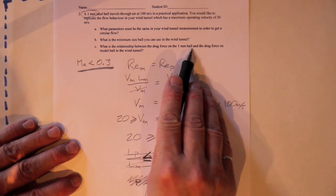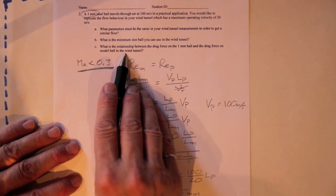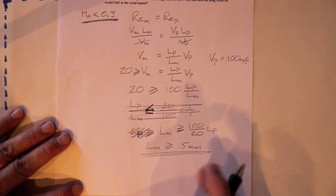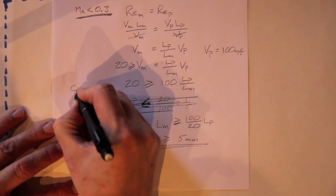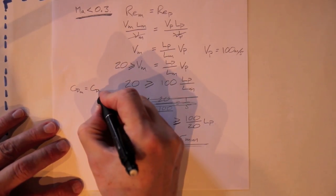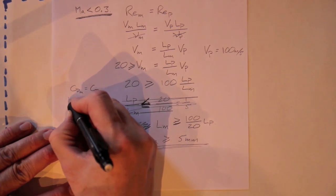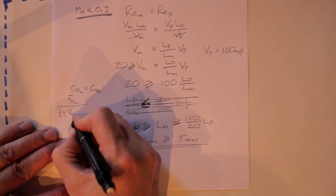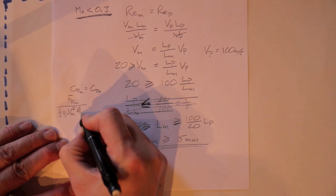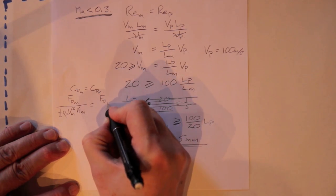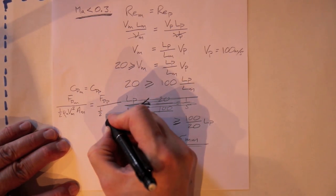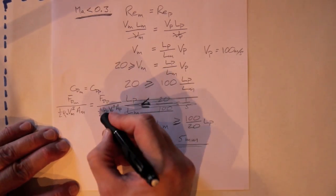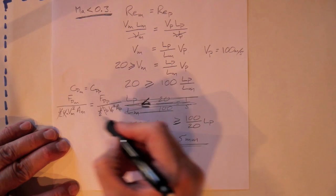What's the relationship between the drag force on the one millimeter ball and the drag force on the model ball in the wind tunnel? If we make the model ball five millimeters and the prototype is one millimeter, the drag coefficients will still be the same. CD for the model will be equal to CD for the prototype. The drag coefficient is the force of drag on the model divided by one half rho_model, V_model squared times area of the model, and that must equal the force of drag on the prototype divided by one half rho_prototype, V_prototype squared, A_prototype. The half cancels out, and the densities cancel out because they're both in atmospheric air.